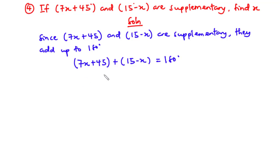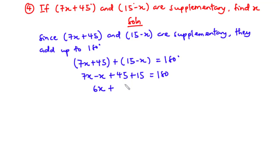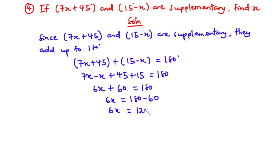Simplifying: 7x minus x plus 45 plus 15 equals 180, giving 6x plus 60 equals 180. Transposing 60 to the right-hand side, we have 6x equals 120. Dividing through by 6, x equals 20. So the value of x is 20 degrees.